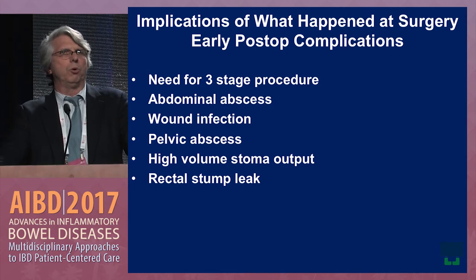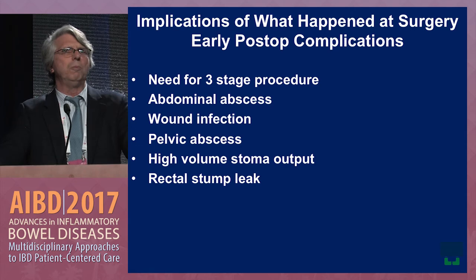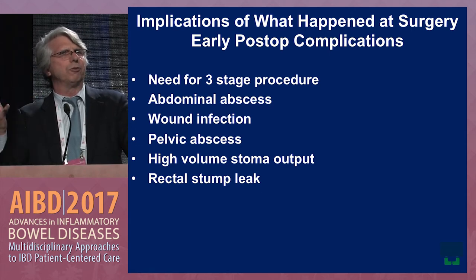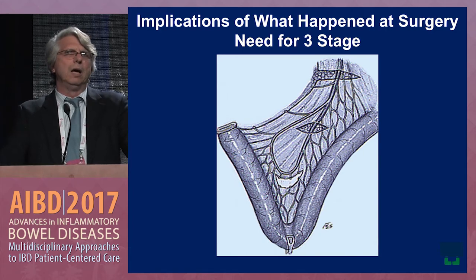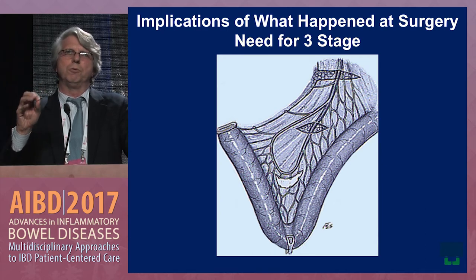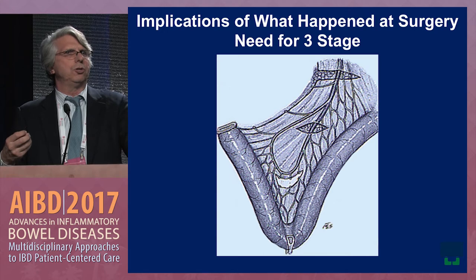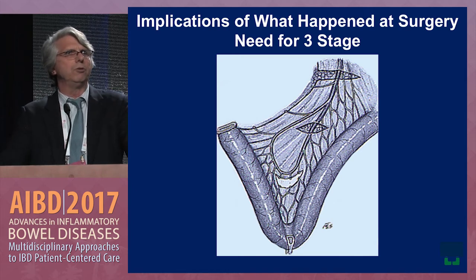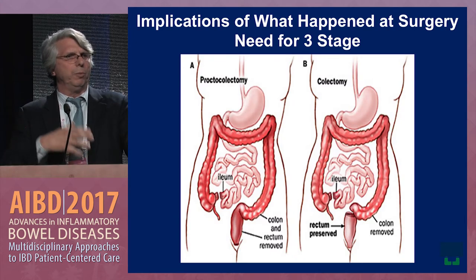There are many reasons the op report influences early post-op complications: the need for a three-stage procedure, abdominal abscesses, infections. A common problem is high-volume stoma output, which you might think is unrecognized Crohn's disease, but may be surgical in origin. Our initial approach for ulcerative colitis is a two-stage procedure — colon and rectum removed, J pouch created, with a temporary ileostomy. But the small bowel must reach all the way down into the pelvis, and sometimes it can't without help, so we divide the mesenteries.